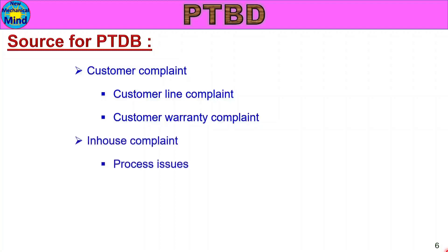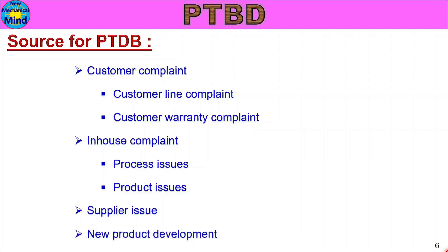Other sources include in-house complaints — process issues and product issues. Any in-house process or product issue is analyzed for root cause and added to the database. Supplier issues from the assembly or production line are also analyzed for root cause. New product development teams and process engineering teams also feed data into the Past Trouble Database.